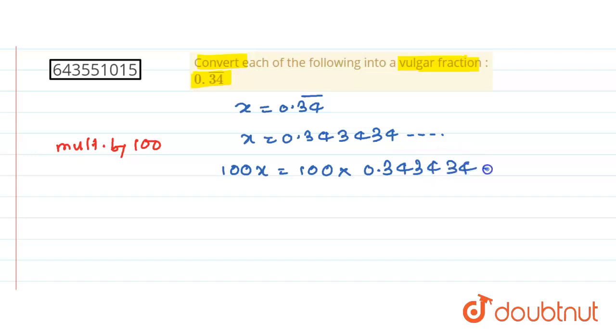This is equal to what? The two digits get shifted, so this becomes 34.34, 34, and so on. So this is 100x.